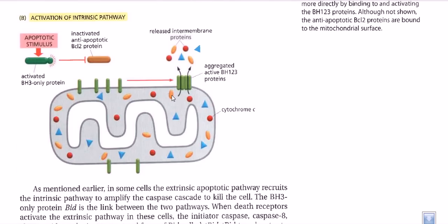Only after the removal of these anti-apoptotic BCL2 proteins will BH123 proteins come closer, make a channel, and only then will cytochrome c molecules be released into the cytosol. In the activated state, BCL2 molecules are inhibited by an apoptotic stimulus — preventing BCL2 from working — which allows BH123 molecules to come closer together to form the complex. This complex was previously prevented by BCL2, so the only job of the apoptotic stimulus is to prevent BCL2 from doing its job.